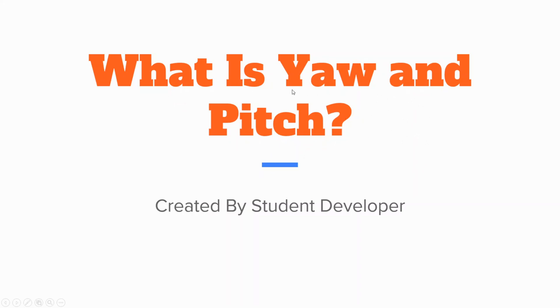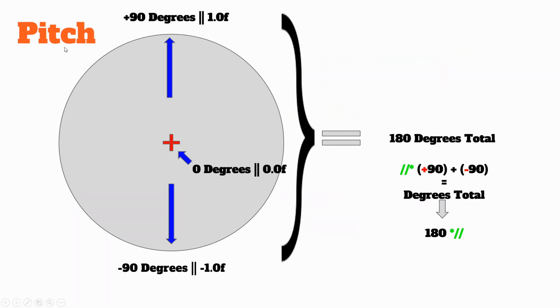So let's get into it. The pitch is when you look straight up and straight down. When you look straight up, your pitch is positive 90, or some games read it as 1 in float. When you're looking straight ahead, your pitch is zero degrees and zero float. When you look straight down, your pitch is negative 90 or read as negative 1 float.